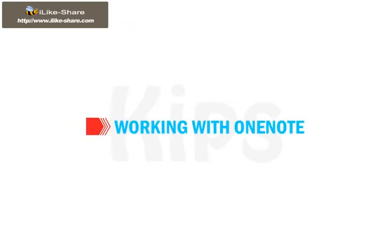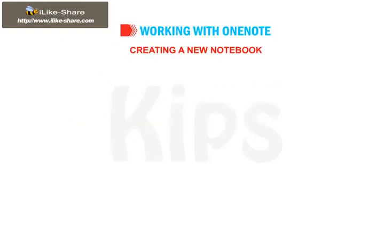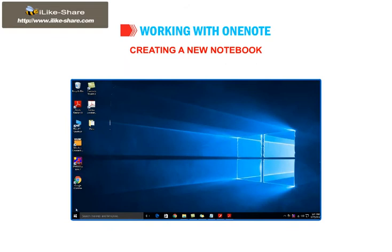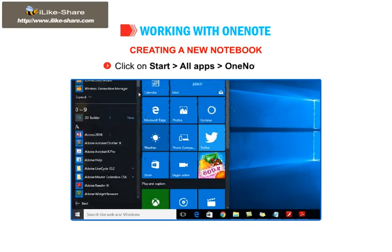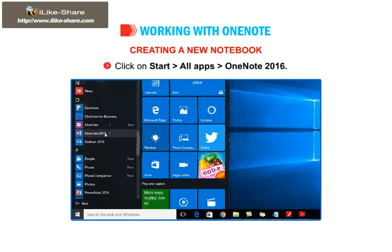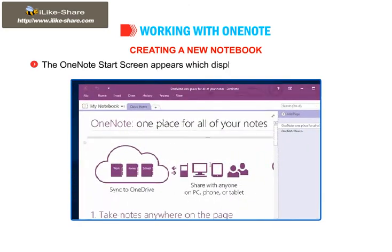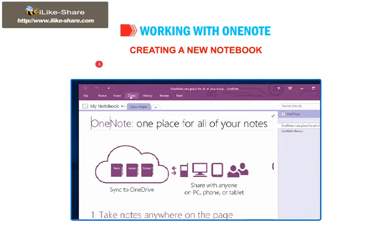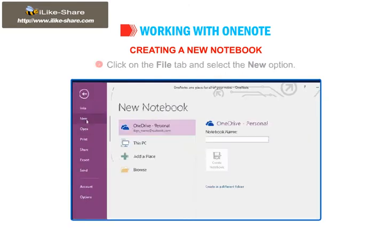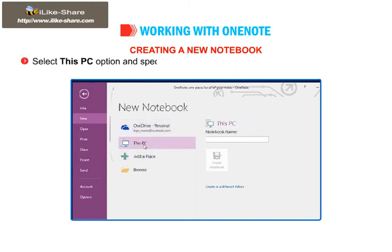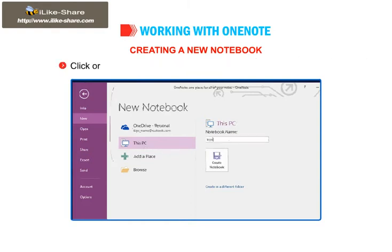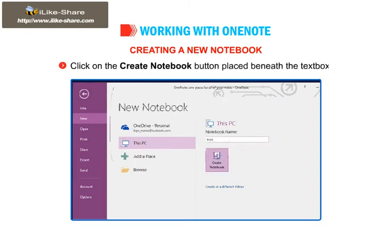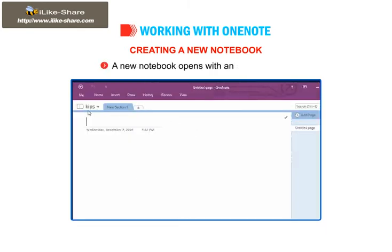Let us learn how to work with OneNote. To create a new notebook in OneNote, click on Start, then go to All Apps, then go to OneNote 2016. The OneNote Start screen appears, which displays the default Quick Notes tab. Click on the File tab and select the New option. The new notebook window appears in the right pane. Select the This PC option and specify a name for your notebook in the Notebook Name text box. Click on the Create Notebook button placed beneath the text box. A new notebook opens with an untitled page.